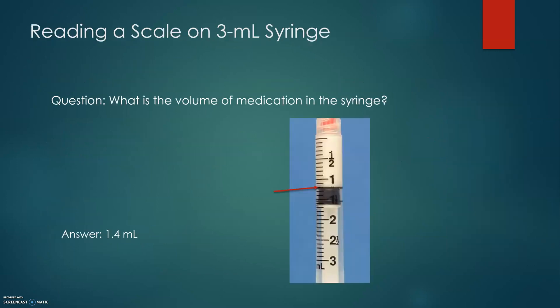Reading a scale on a 3 milliliter syringe — Question: What is the volume of medication in this syringe? To answer, we count how many full large calibrations are present. We can observe this is 1 milliliter. Since this is a 3 milliliter syringe with calibration in tenths, the correct answer is 1.2 milliliters — not as may be misread. It is very easy to misread the calibration.